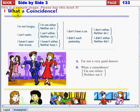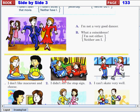All right, next is the negative or what a coincidence. I'm not hungry, I'm not either, neither am I. I can't swim, I can't either, neither can I. I haven't seen that movie, I haven't either, or neither have I. I don't have a car, I don't either, or neither do I. I didn't work yesterday, I didn't either, neither did I.